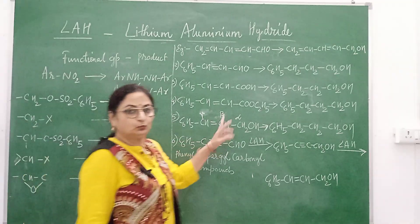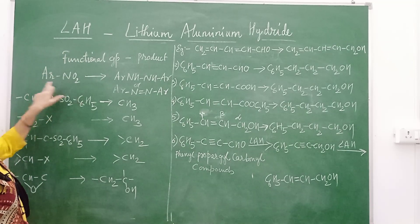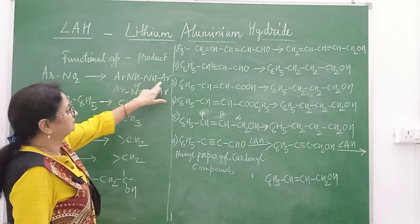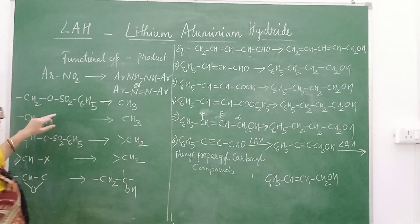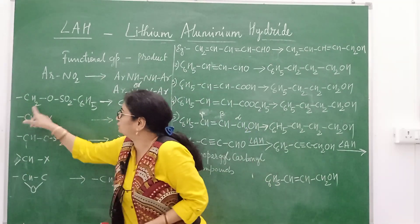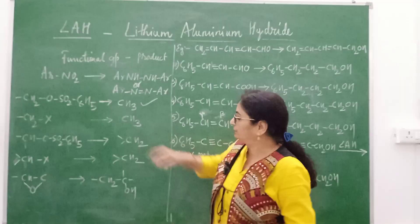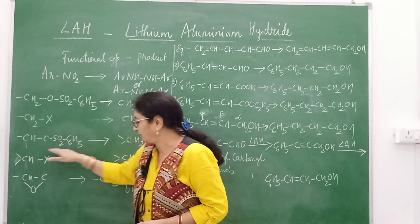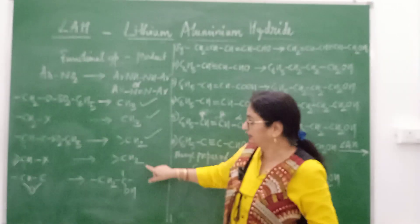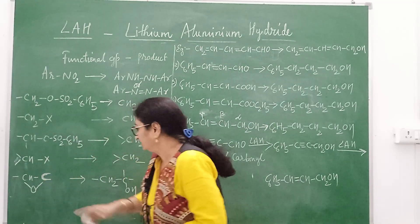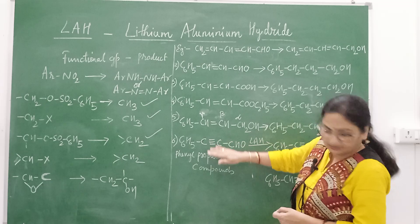Continuing with more examples: aryl nitro compounds (ArNO2) are reduced to Ar-NH-NHAr or Ar-N=N-Ar. The functional group CH2-O-SO2-C6H5 is reduced to a methyl group (CH3); similarly CH2X (halides) is also reduced to CH3. CHO-SO2-C6H5 is reduced to CH2; CHX halides also get reduced to CH2. Epoxides get reduced to CH-OH, forming an alcohol.